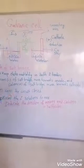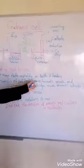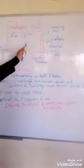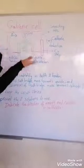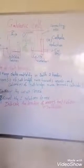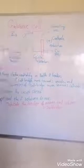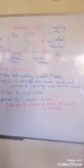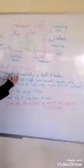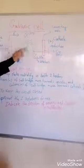Inside the salt bridge, we have cations (Na⁺) and anions (Cl⁻). The anions (Cl⁻) move toward the anode in order to maintain electrical neutrality. The cations (Na⁺) move toward the cathode, also to maintain electrical neutrality.